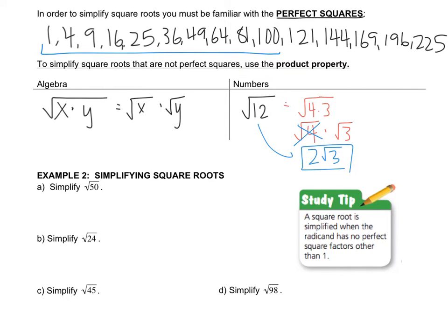Although that doesn't necessarily look simpler to you, it is. Just in the same way that 3 over 6 doesn't necessarily look simpler than 1 over 2 when you were first learning how to reduce fractions, 2 radical 3 is actually a simpler form of radical 12. And just like with fractions, you should always reduce your radicals.